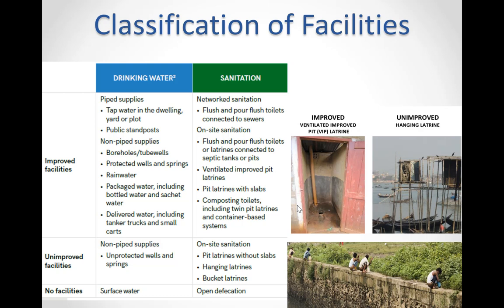For example, under water, a person without access to improved drinking water — such as from a protected borehole well or municipal pipe supply — is forced to rely on sources such as surface water, unprotected and possibly contaminated wells, or vendors selling water of unverifiable source and quality. For many communities, water sources are usually far from their homes.